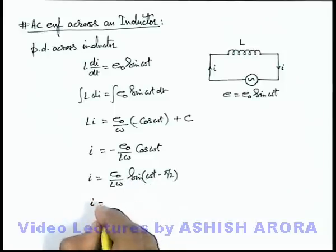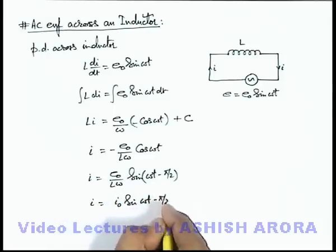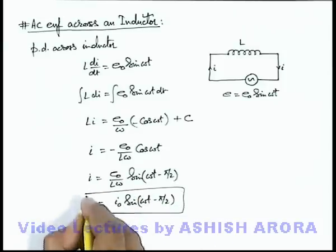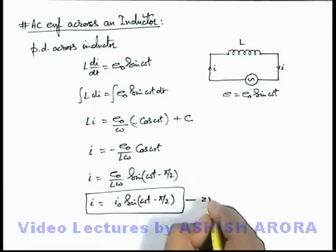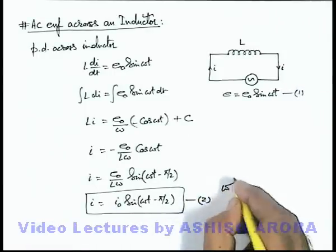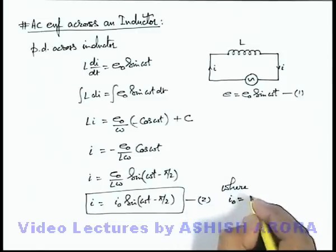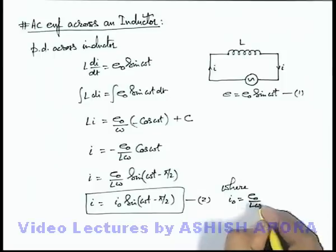Which we can write as i₀ sin(ωt - π/2). So a sinusoidal current is flowing, which we write as equation 2, and EMF as equation 1. Where peak current in the circuit is i₀, which can be written as e₀ by Lω.